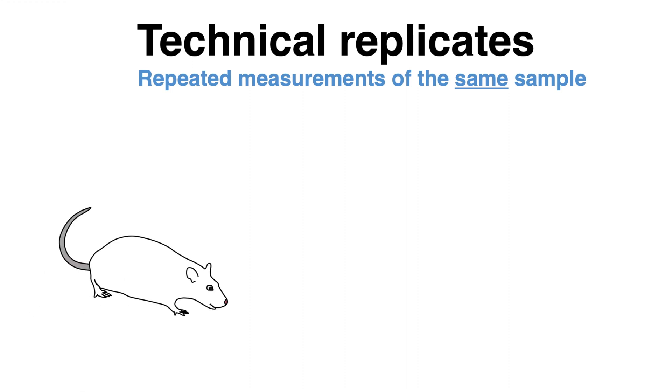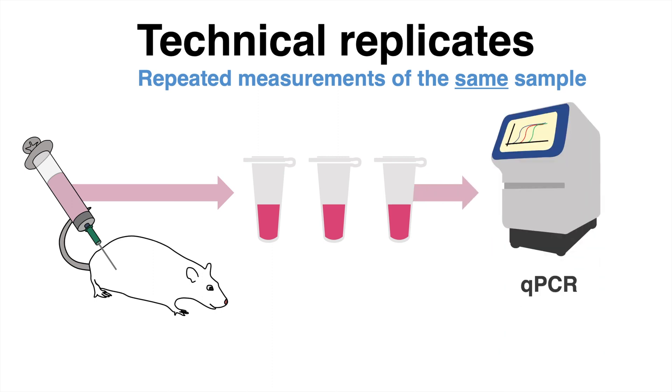Again, we have a mouse extract the blood sample and from this we create three smaller sub-samples. Remember, these three sub-samples are still from the same mouse. In this example, the gene expression is monitored with qPCR, in which technical replicates are frequently used.